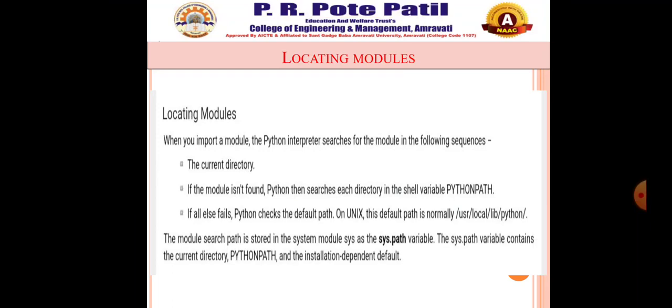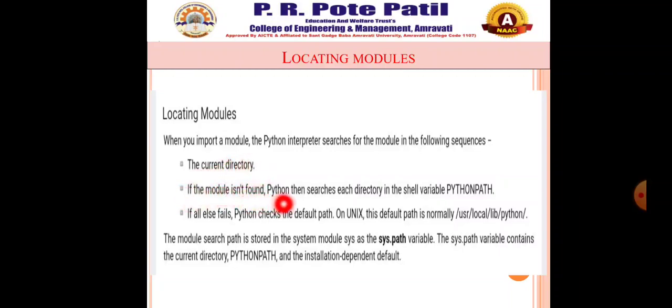Locating the modules is very important — you need to know where your module is stored. When you import a module, the Python interpreter searches in the following sequence: first, the current directory. If the module isn't found, Python then searches each directory in the shell variable PYTHONPATH. And if all else fails, Python checks the default path — on Unix, this default path is normally /usr/local/lib/python.